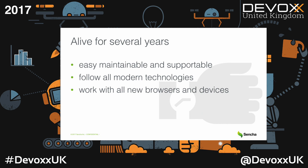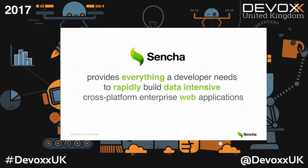An application should be alive for several years, so it should be easy to maintain and scale, should follow all new modern techniques, specification standards, and should work with all new browsers and devices. You could not lose users who have installed the latest version of Chrome, for example. Sencha suits perfectly these enterprise requirements because it provides a JavaScript framework and all tools around it that let you rapidly build data-intensive cross-platform enterprise web applications.